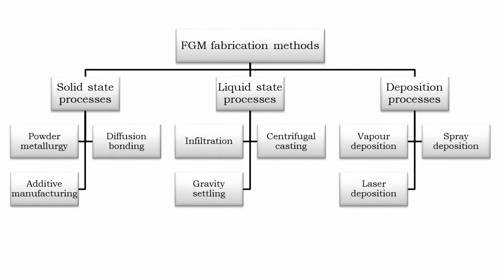Now let's discuss the fabrication methods of FGMs. There are several popular methods of FGM fabrication. Broadly, we can subdivide the fabrication process into three categories. Solid state process, in which fabrication is carried out when the constituent materials are in solid state — three processes of this type are powder metallurgy, diffusion bonding, and additive manufacturing. The second type is liquid state process — three processes of this type are infiltration, centrifugal casting, and gravity settling. The third and final type is deposition process, which includes vapor deposition, spray deposition, and laser deposition.